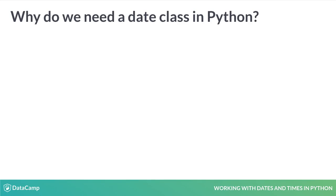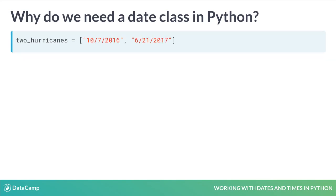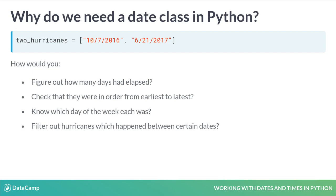Why do we need a special date class? To understand how dates work, in this chapter you're going to be exploring 67 years of hurricane landfalls in the US state of Florida. Two_hurricanes is a list with the dates of two hurricanes represented as strings: the last 2016 hurricane on October 7th, 2016, and the first 2017 hurricane on June 21st, 2017. The dates are represented in the US style with the month, then the day, then the year. Suppose you want to do something interesting with these dates — how would you figure out how many days had elapsed between them, check that they were ordered from earliest to latest, or know which day of the week each was? Doing these things manually would be challenging, but Python makes all of them easy. By the end of this chapter, you'll know how to do each of these things yourself.